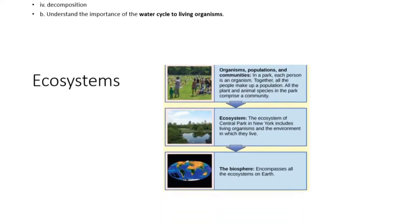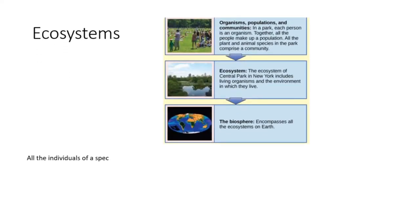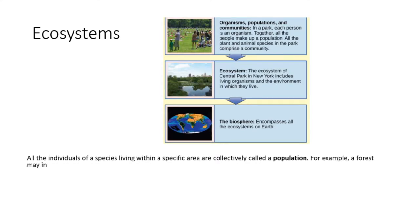All the individuals of a species living within a specific area are collectively called a population. For example, a forest may include many white pine trees. All of these pine trees represent the population of white pine trees in this forest.